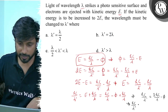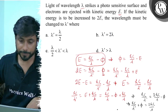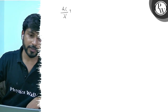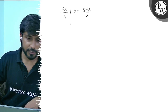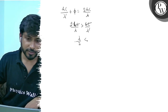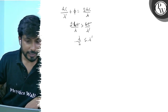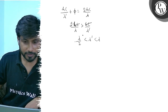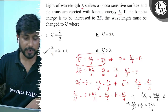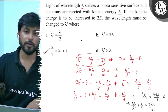So hc by lambda dash plus phi equals 2hc by lambda. Since phi is positive, we know that 2hc by lambda is greater than hc by lambda dash. Cancelling hc, we get lambda by 2 is less than lambda dash, so lambda dash is greater than lambda by 2. But lambda dash is less than lambda. So the final answer is option C: lambda dash is greater than lambda by 2 but less than lambda.